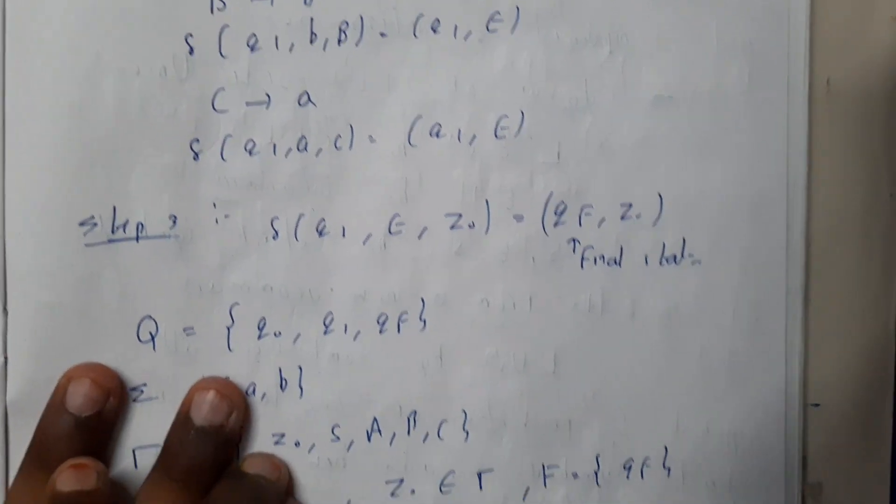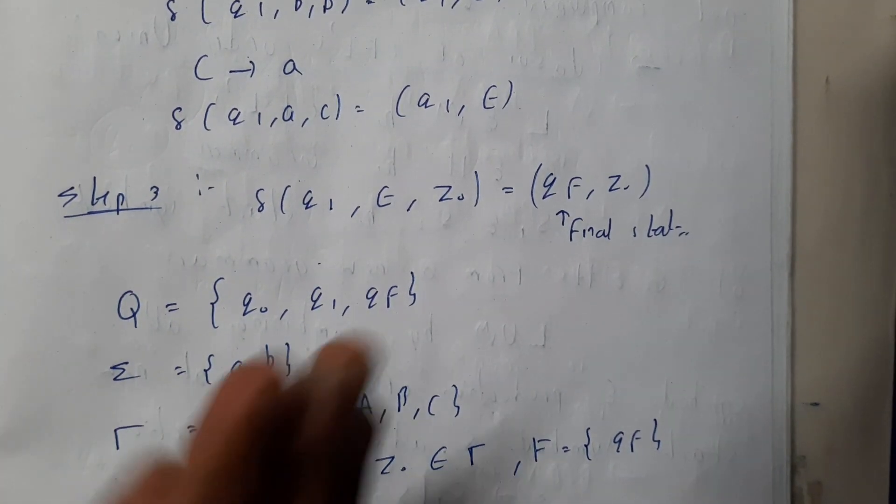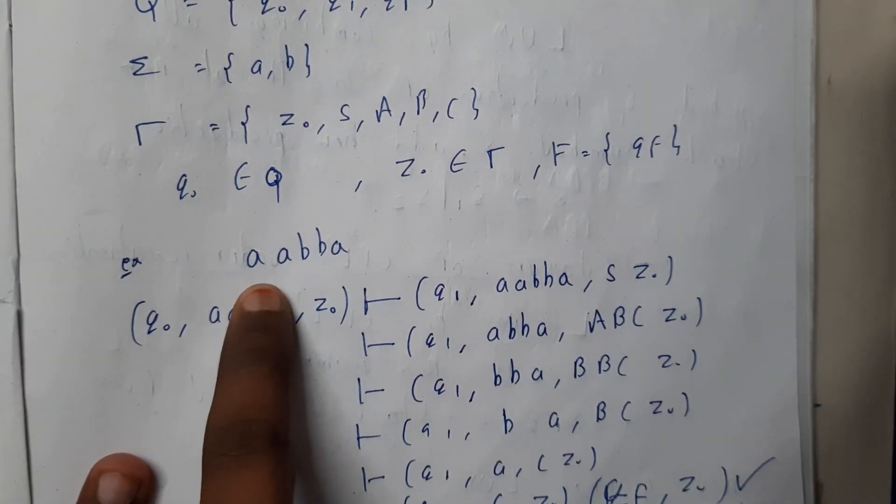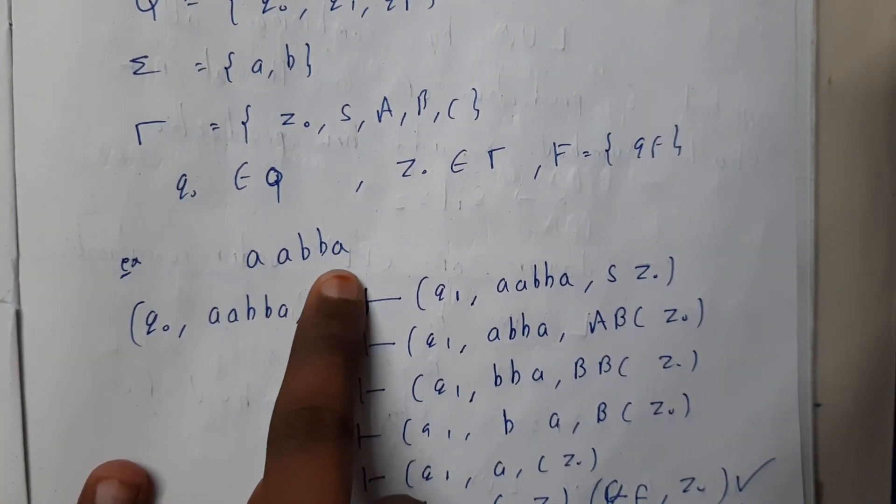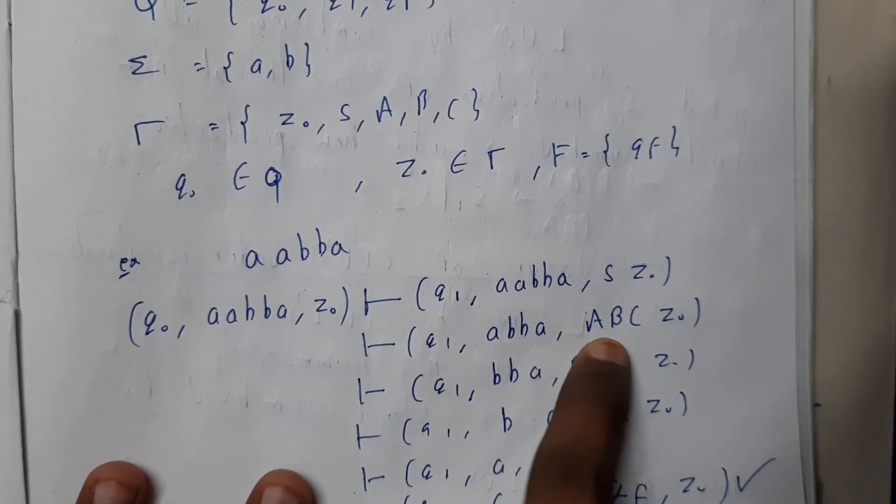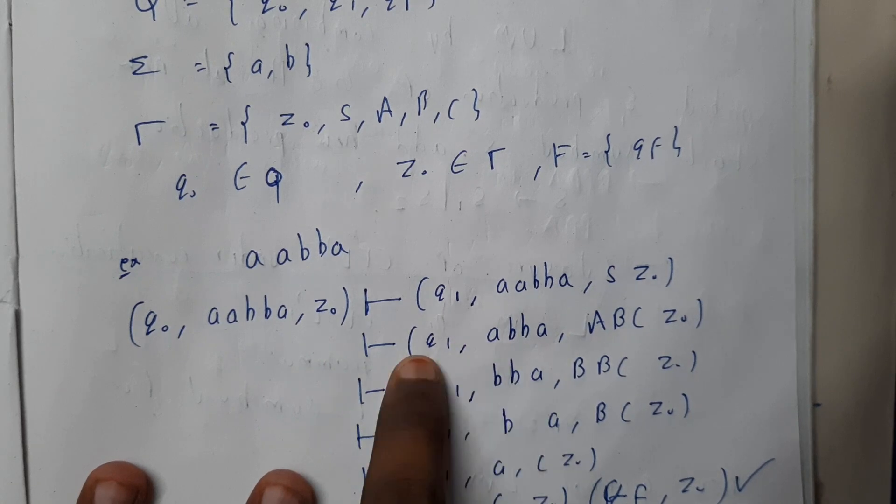Okay, so using that you have just written the PDA functions, all those things, and you have just took a small example a a b b. So Q1 with a, it becomes a b c z naught, Q1 with a.